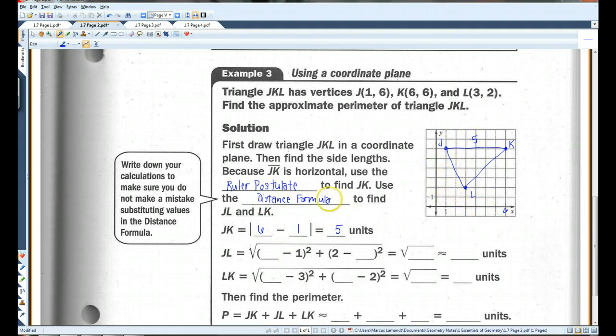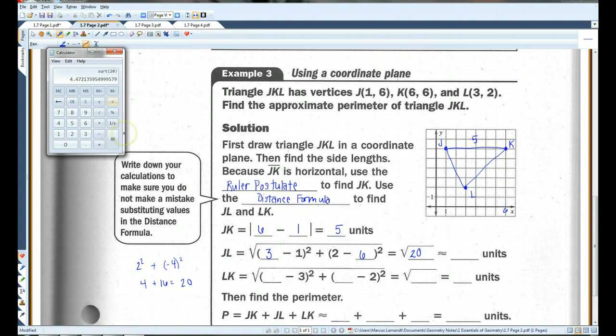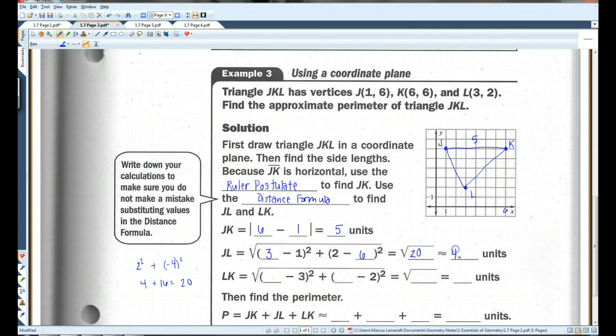JL is going to be 3 minus 1 squared, because we have 3 and 1 for our X's. And 2 minus 6 squared, because we have 2 and 6 for our Y's. So, let's see here. 3 minus 1 is 2, 2 squared plus 2 minus 6 is 4, or negative 4, rather. Negative 4 squared. So, we have 4 plus 16, which is 20. So, in the square root, we've got the square root of 20. Let's pull out the calculator again. The square root of 20 is 4.47, approximately. So, JL, 4.47.